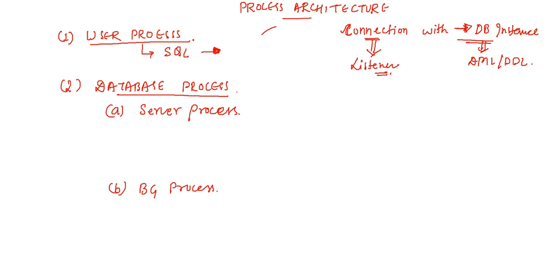While studying about database buffer cache, we used this server process name multiple times. That server process used to carry or take the copy of the data block from the data files and keep it in the buffer - that is the database buffer. Server process is very important in terms of connectivity, making the connection of the user process with the database, and connecting the Oracle instance with the disk and memory segments.